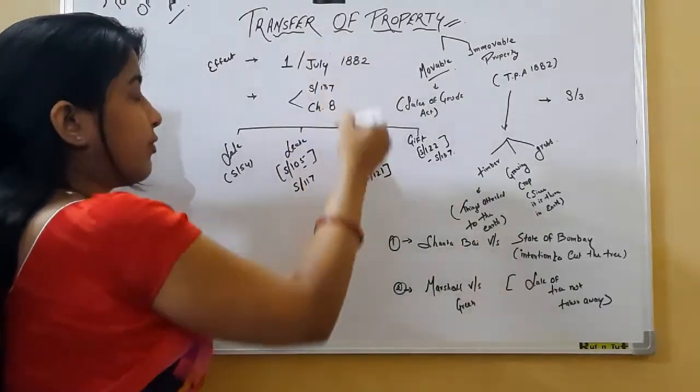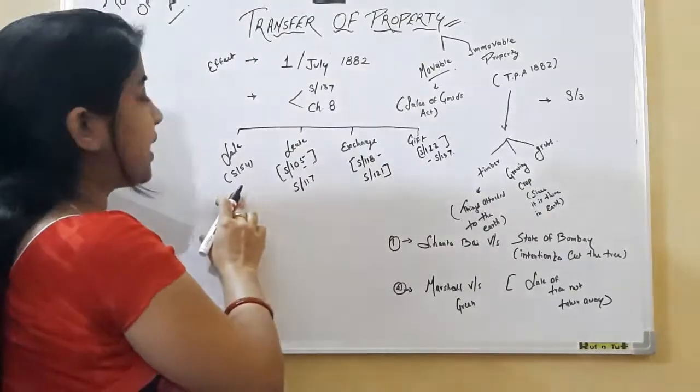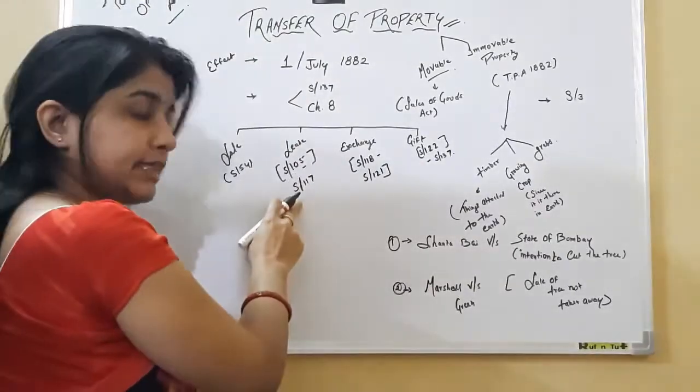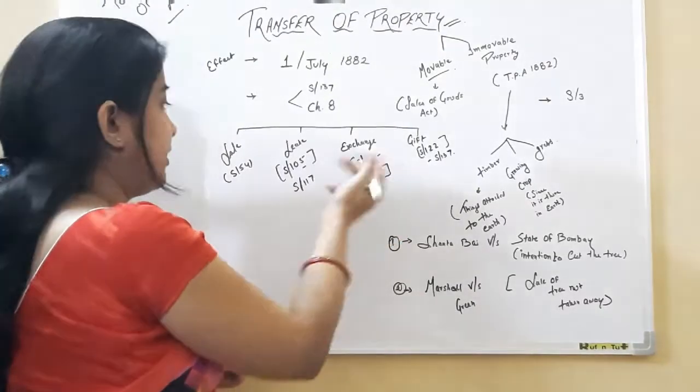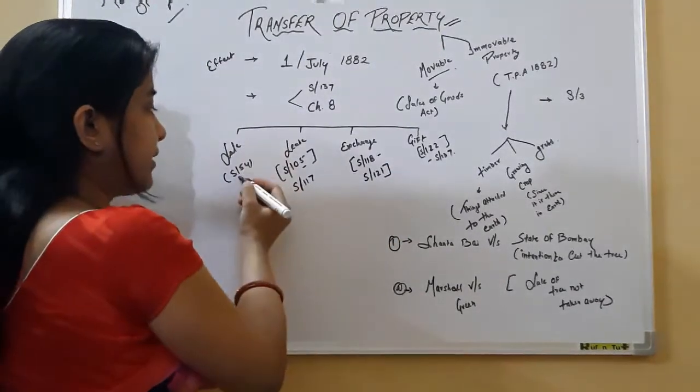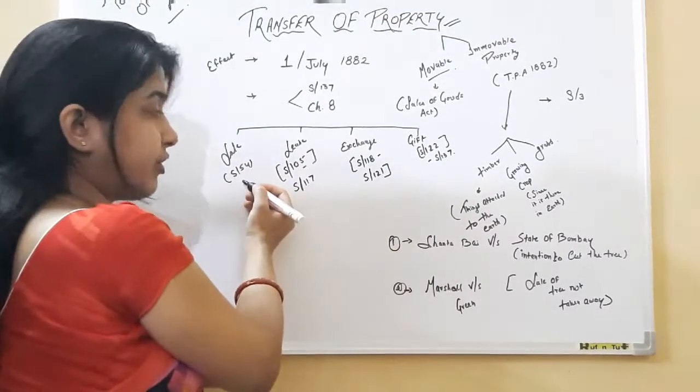This Transfer of Property Act will be divided into four parts. First part is sale, second part is lease, third part is exchange, fourth part is gift.